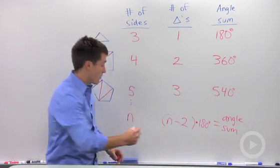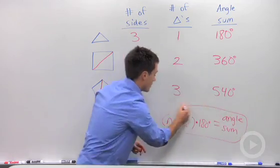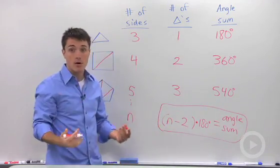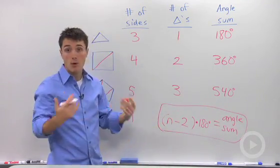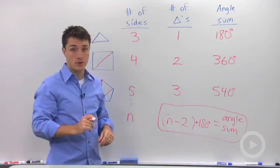So notice we've created our formula. If you want to know the sum of the angles in any polygon, subtract two from however many sides you have, and multiply by 180 degrees.